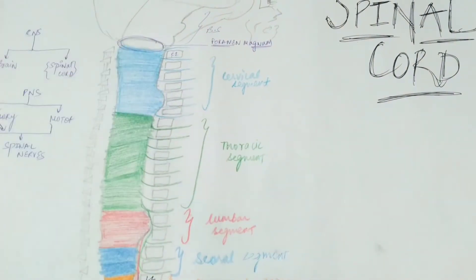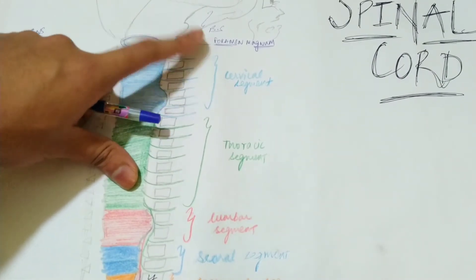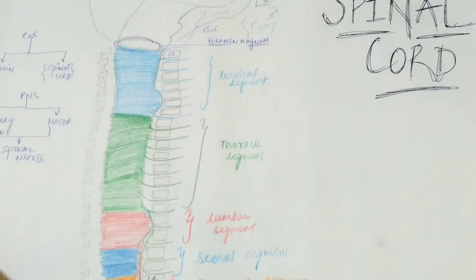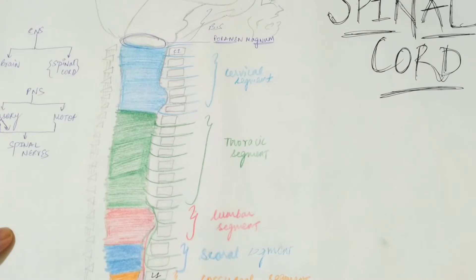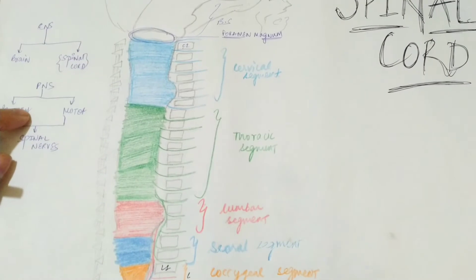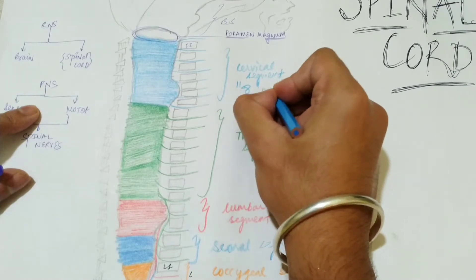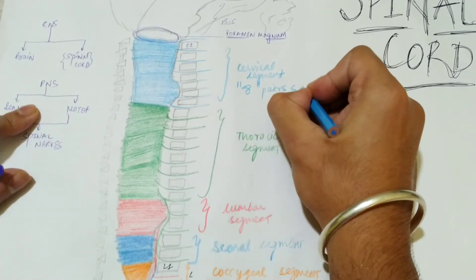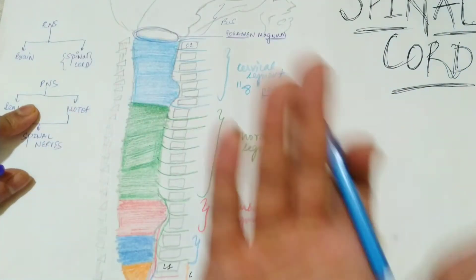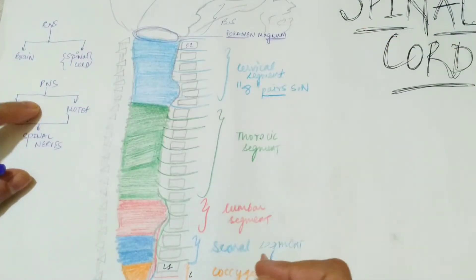In each segment, spinal nerves are present between the vertebrae — these are fibers originating from the spinal cord. Let's count the number of spinal nerves in each segment. There are 31 pairs of spinal nerves in total. In the cervical segment there are eight pairs of spinal nerves. They are counted in pairs because spinal nerves arise from both right and left sides.